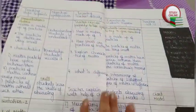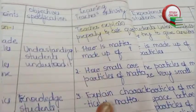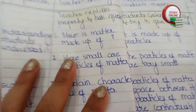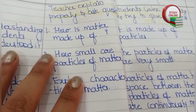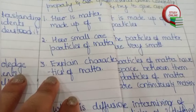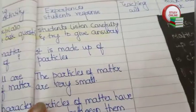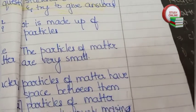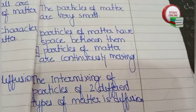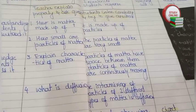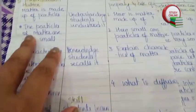Now let's see the presentation part — Presentation 1. The questions here are: How is matter made up? How small are particles of matter? Explain the characteristics of matter. And the last question: What is diffusion? Here are the expected answers you can see. Here is the blackboard work that we have to write on the blackboard.